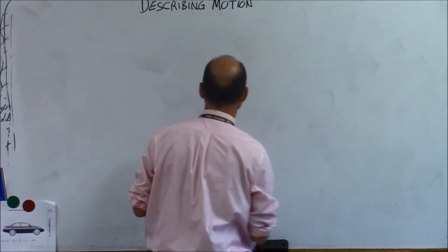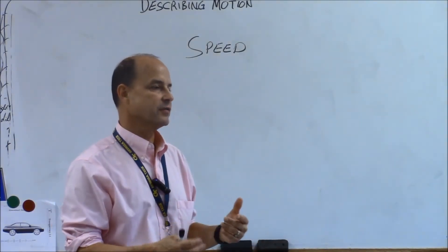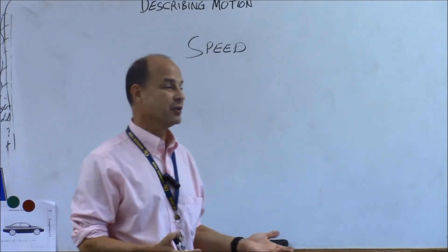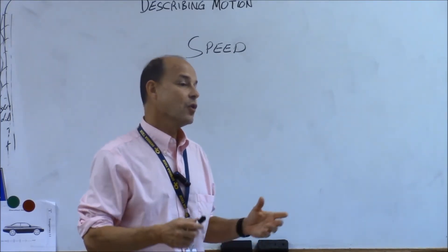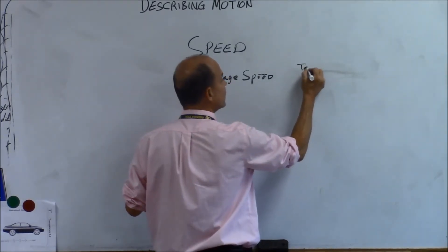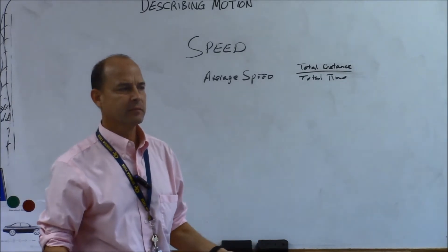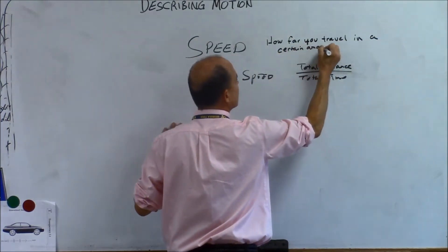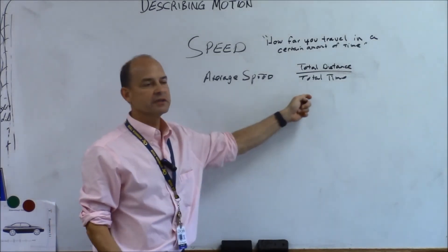I've got a lot to say about speed. Let's talk about a trip to Atlanta — just round numbers. It's about 100 miles and it takes a couple of hours. So your average speed is your distance over your time, your total distance over your total time. A book definition: speed is distance per unit time, how far you travel in a certain amount of time. Average speed is your total distance divided by your total time.